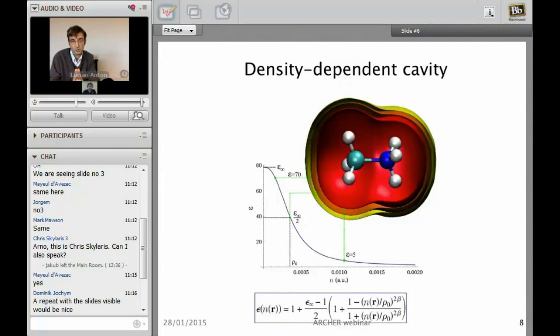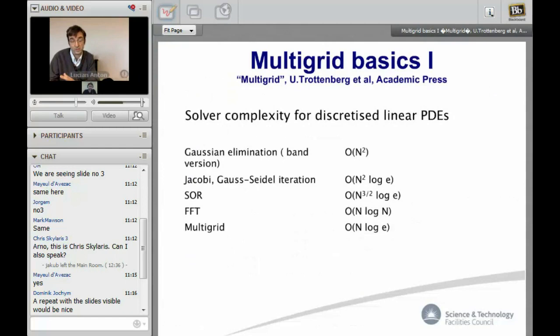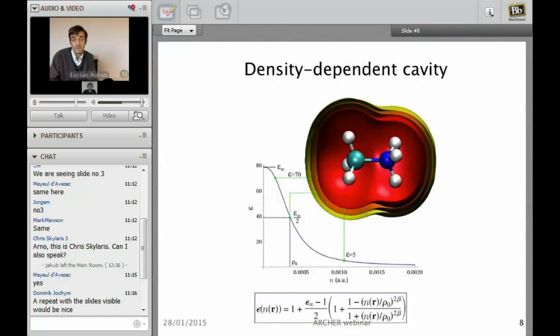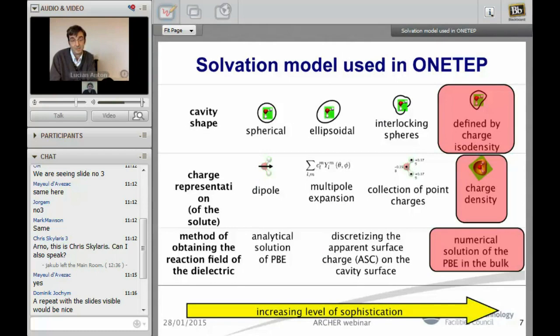To continue what Chris said, what one has to do is to compute the electrostatic potential which contains information from both the charge density coming from electrons and nuclei and also from the solvent. This can be done with Poisson equation which is the first equation. In my initial version I had some animation but now it's all in one go.